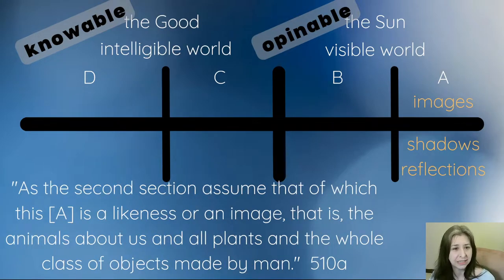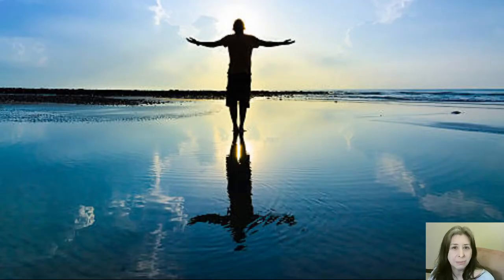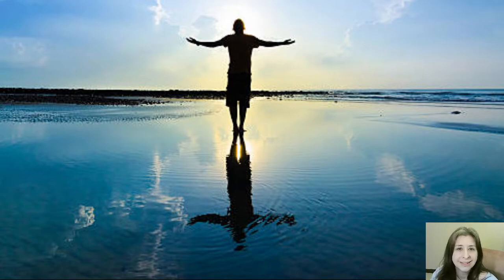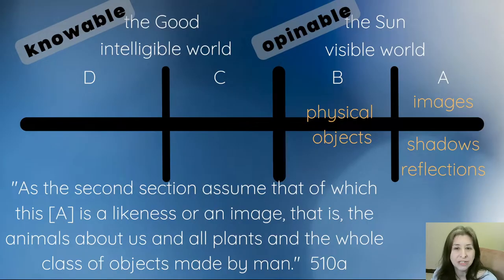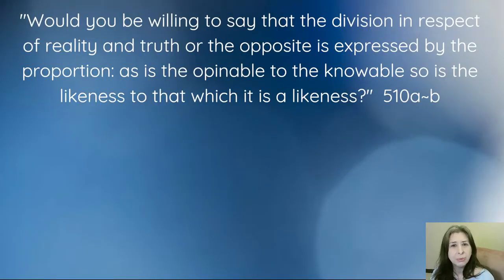Going on to the next section, he says as the second section, assume that of which section A is a likeness or an image—that is the animals about us, all plants, and the whole class of objects made by humans. For example, this person would be section B and the reflection in the water represents section A. We're talking about physical objects here. For now, we'll just stick with the literal meaning and put in physical objects.